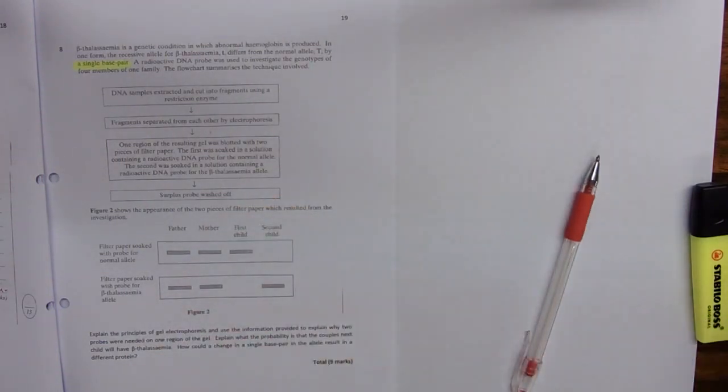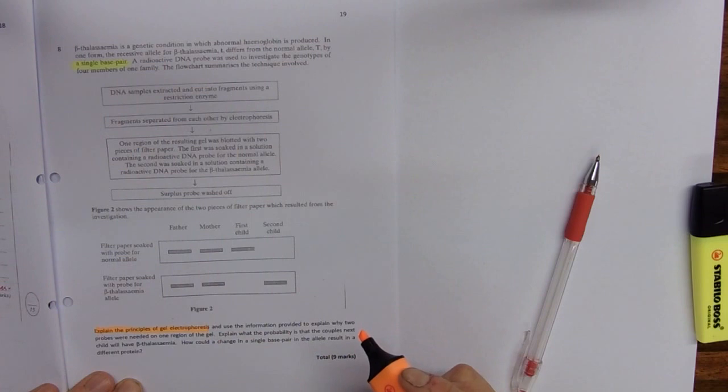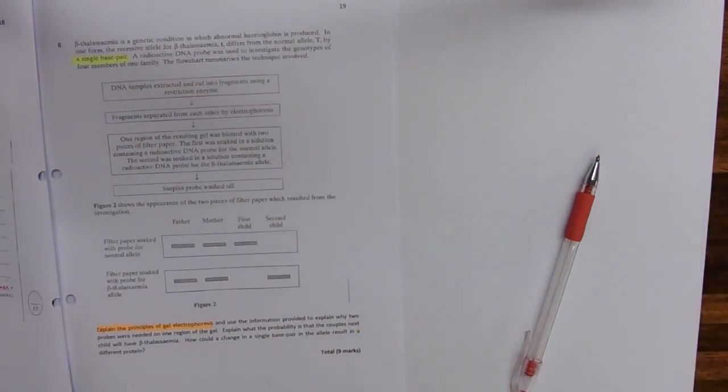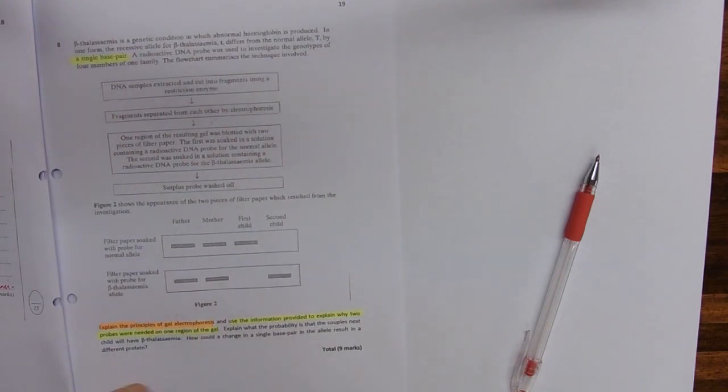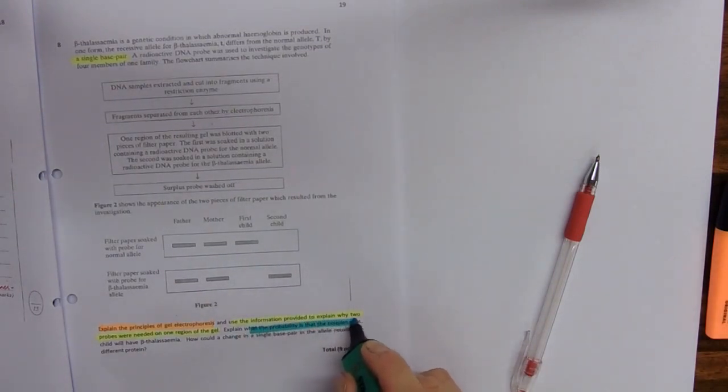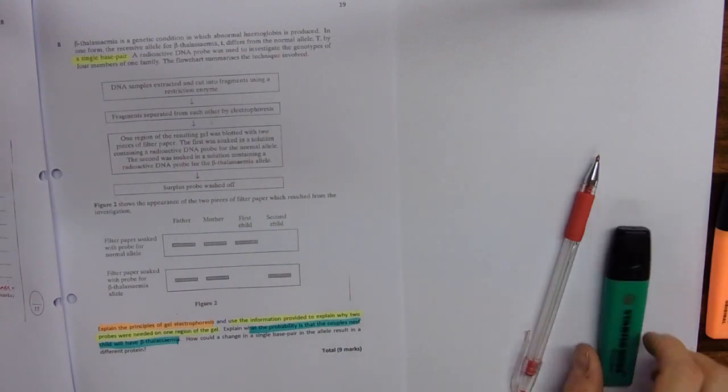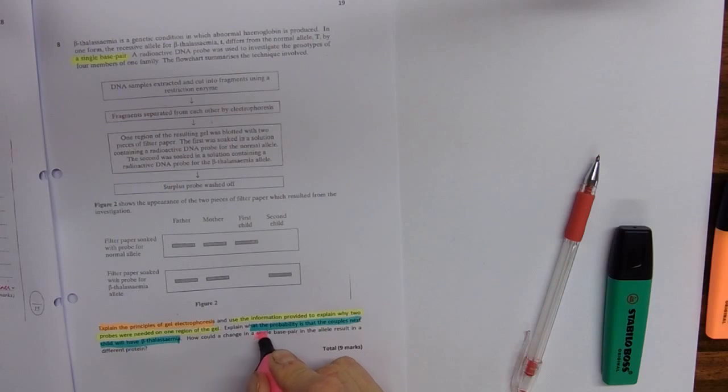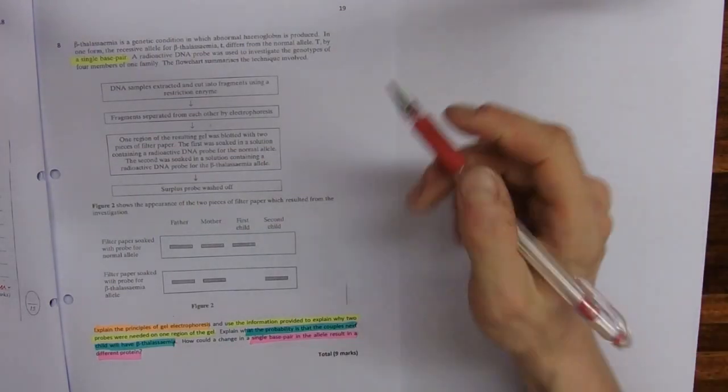What do we need to do? We need to explain the principles of electrophoresis. We need to use the information provided to explain why two probes are needed on one region of the gel. We need to know what probability the couple's next child will have the disease. And then tell us about this mutation - how could it result in a different protein? So there's four things there, but probably the first two could be put together. And again, I'm not going to write all this out. I'll just give you the principles.